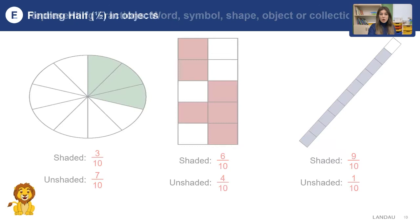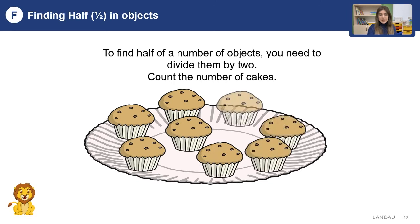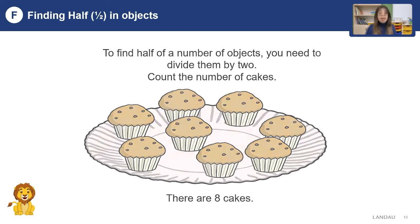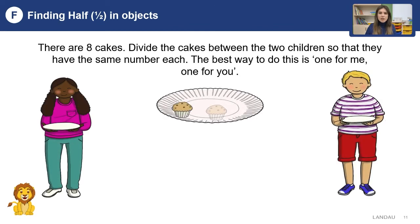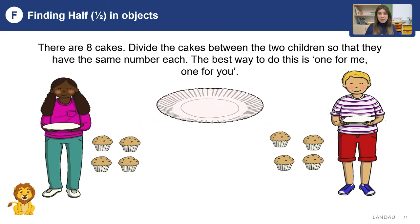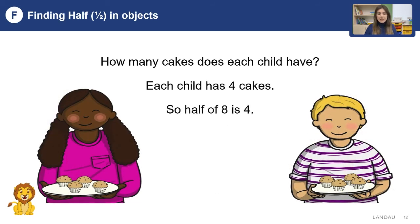Thank you so much. Let's find half of objects. To find half of a number of objects, you need to divide them by two. Let's count the number of cakes — there are eight cakes. How can we divide them between two people? Divide the cakes between two children so that they have the same number each. The best way is: one for me, one for you. At the end of this sharing, each child has four cakes. It means that half of eight is four.